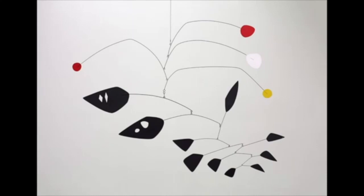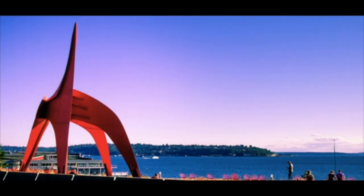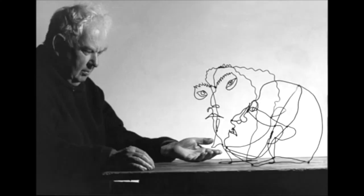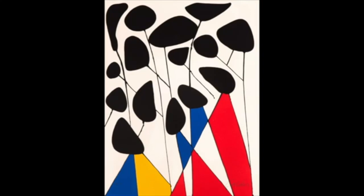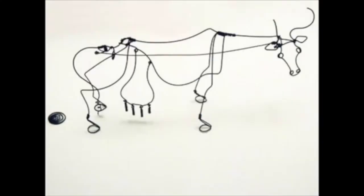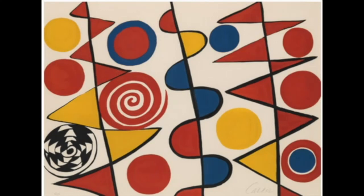One of the things I really enjoy about the work of Alexander Calder is the way that he uses line. Whether it is in a drawing, a painting, or a sculpture, he uses line to create shape. And with that shape, he creates color.